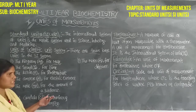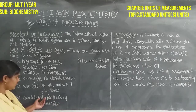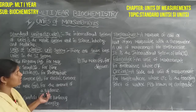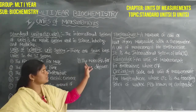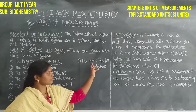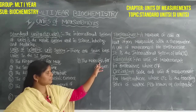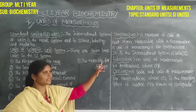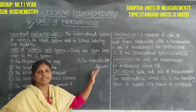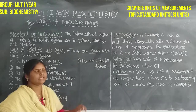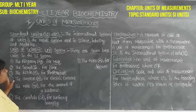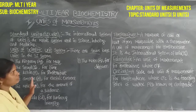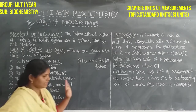Candela — abbreviation CD — for luminous intensity, to identify the intensity of light. Then next is Meter — abbreviation M — for distance. This is the units of the scientific unit system.